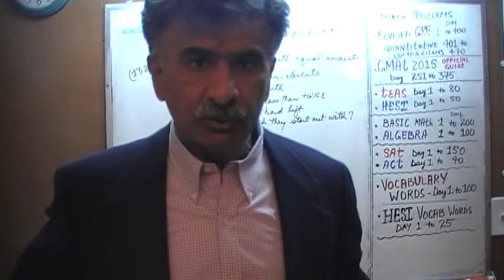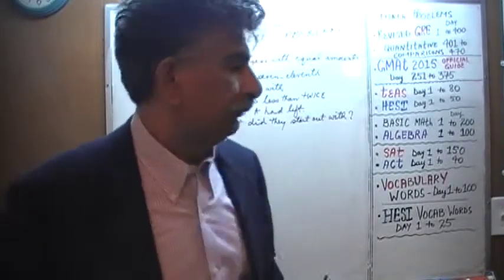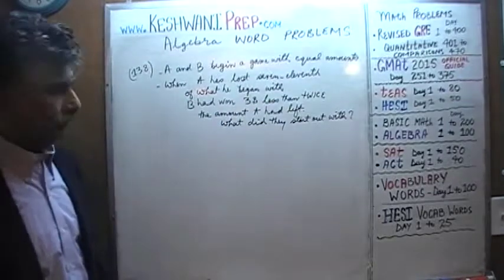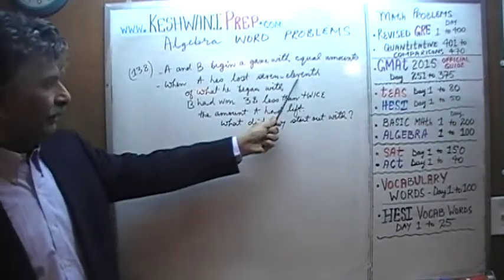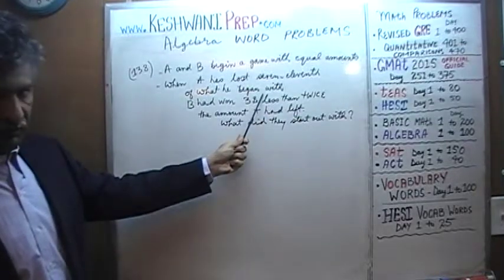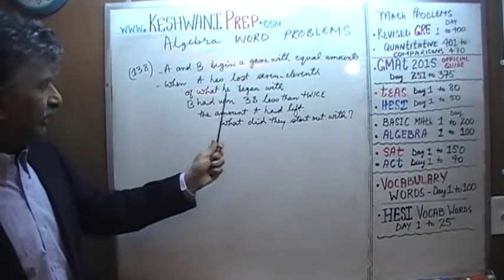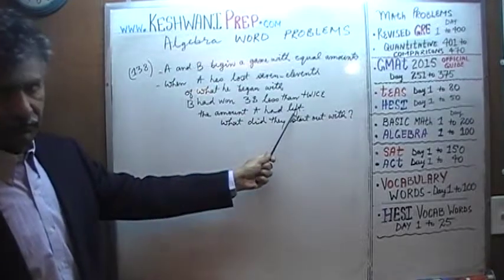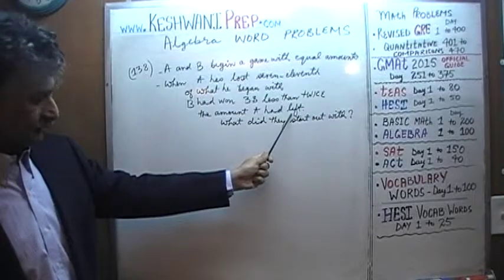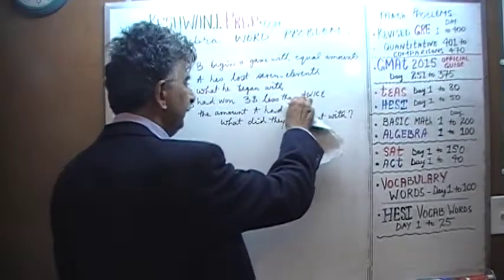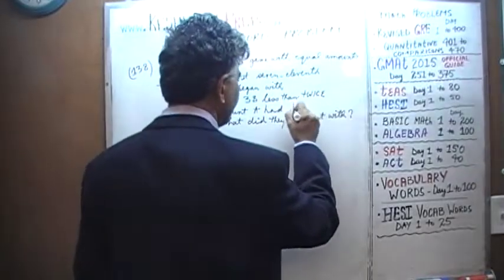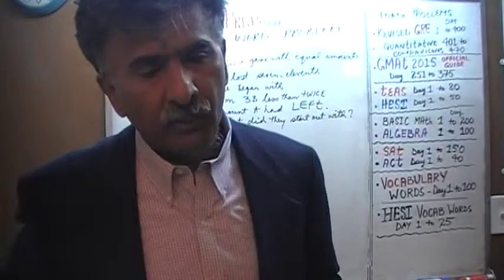Once you've solved it on your own, compare your work against the work that you and I will do together. Here's the problem: we are told that we have two people, A and B, who begin with equal amounts. When A has lost 7/11ths of what he began with, at that point B had won three dollars less than twice the amount that A had left — not what A had lost, but what A had left. The question is: what did they start out with?